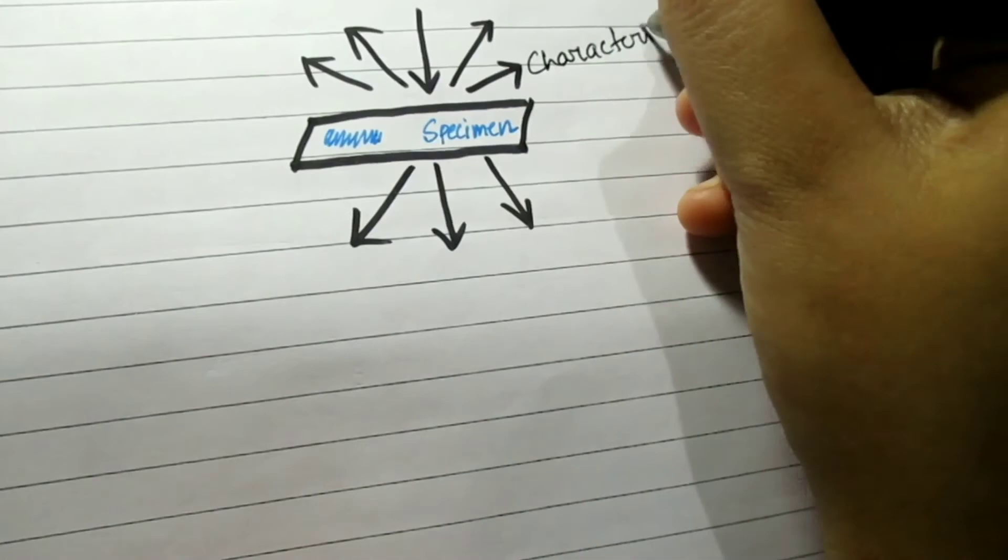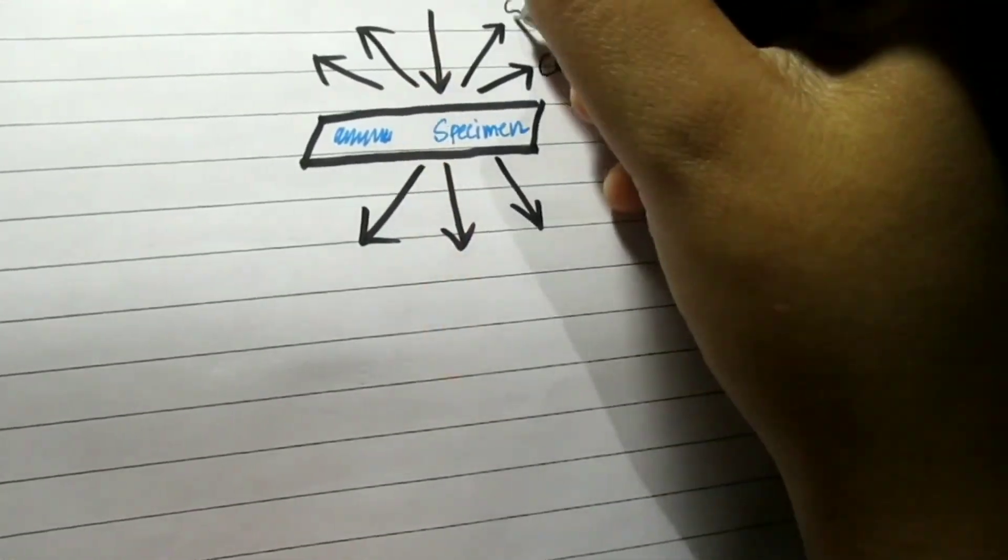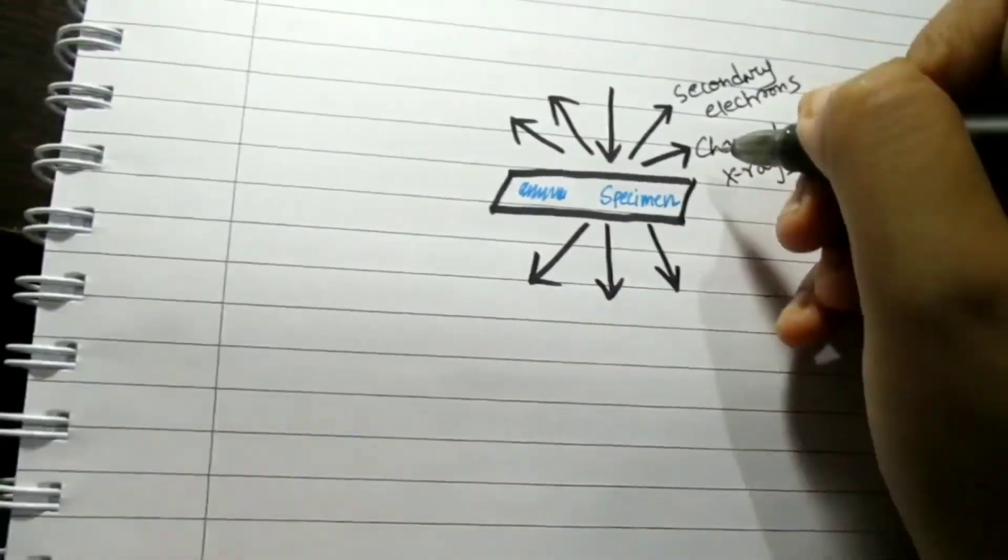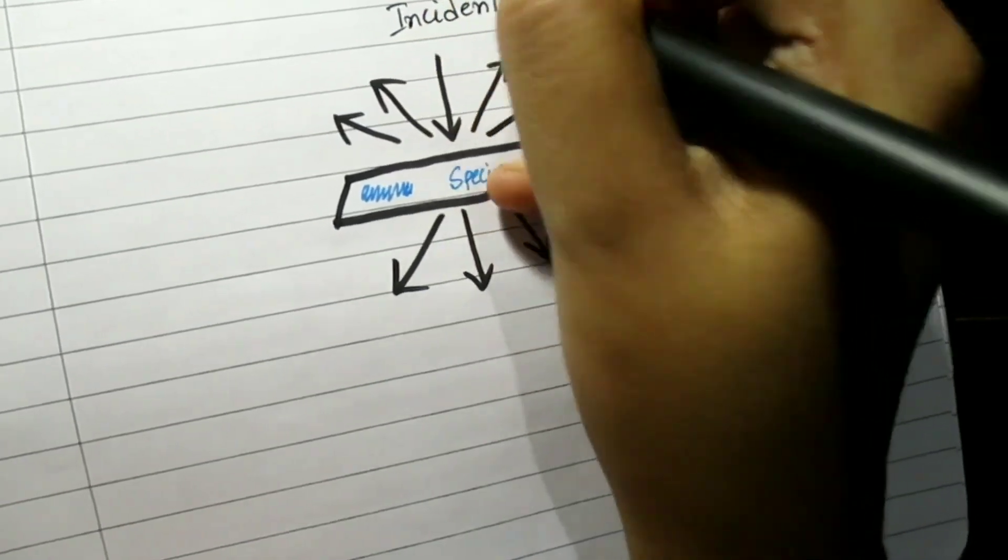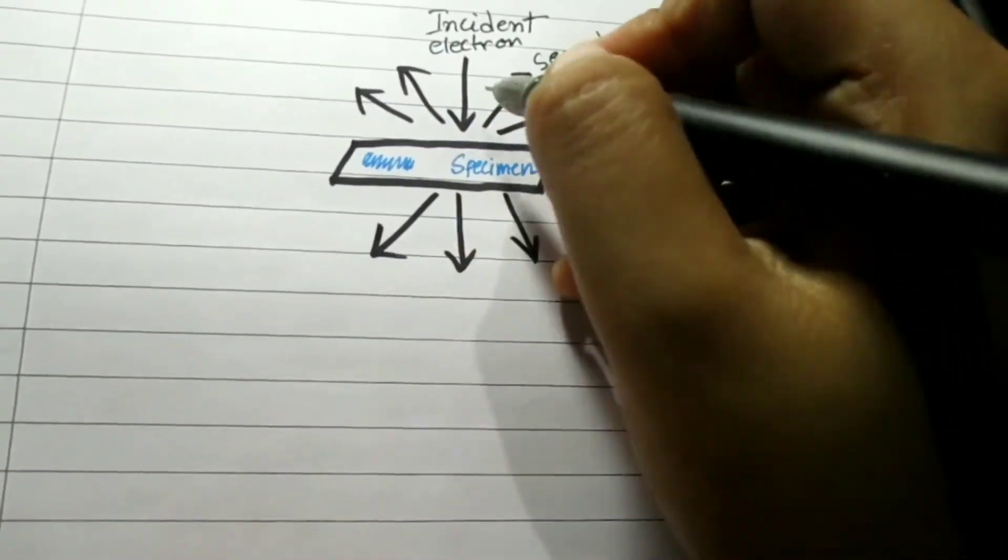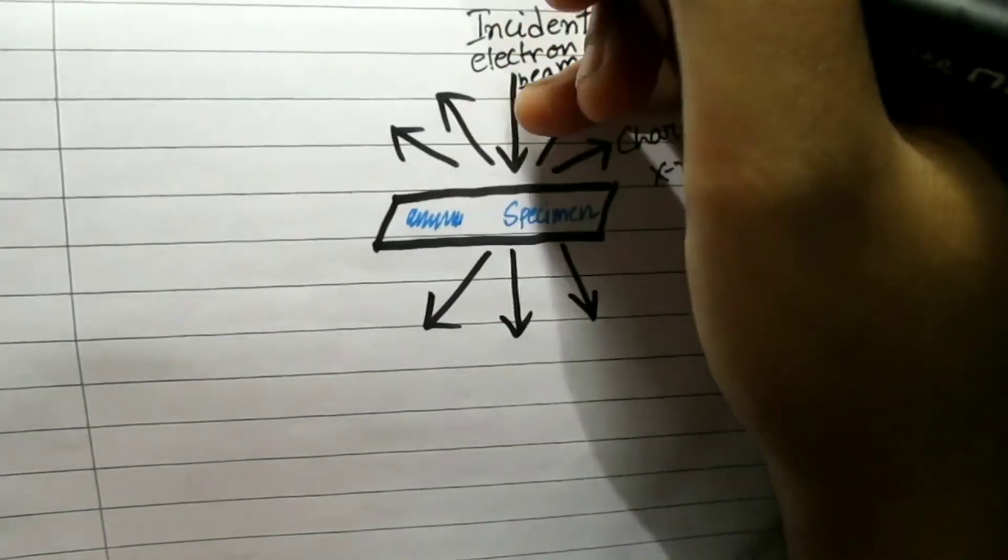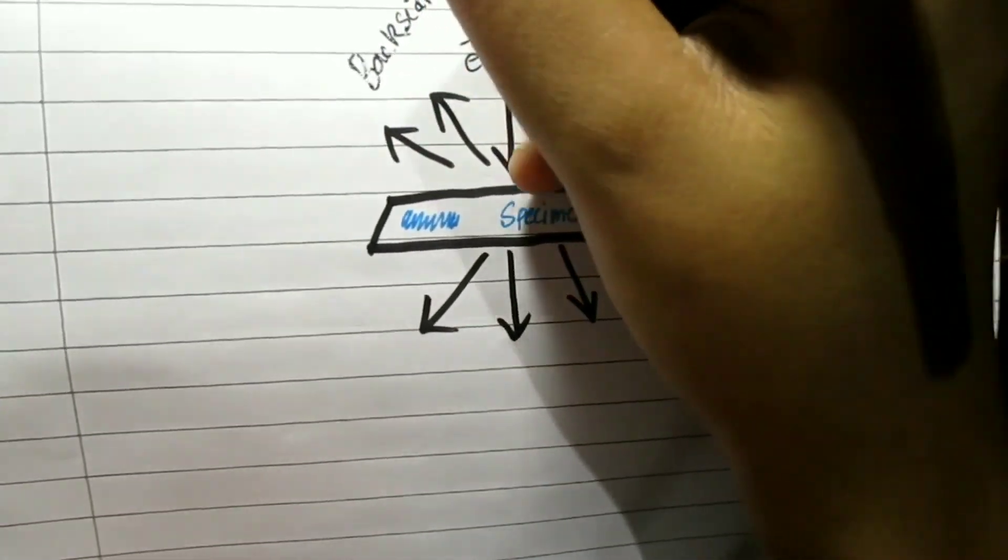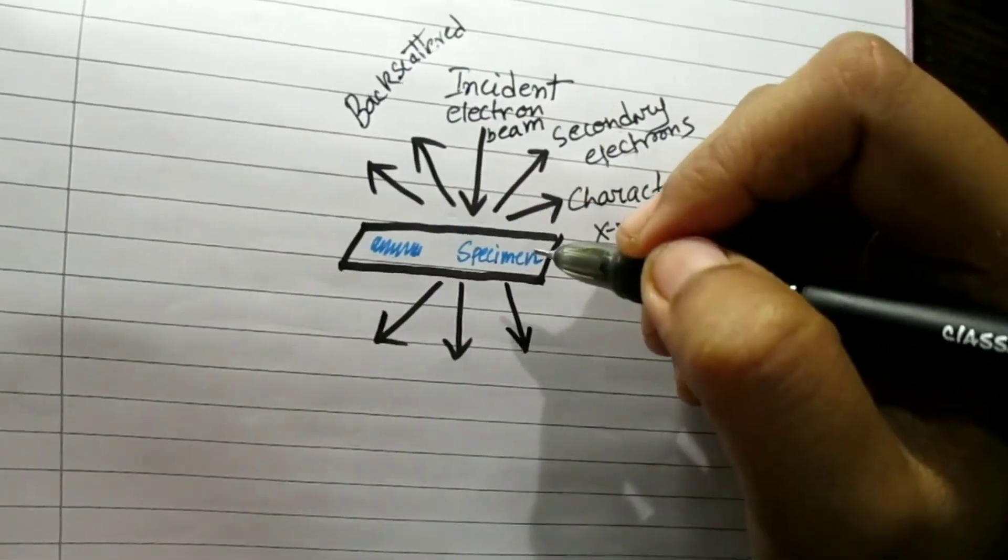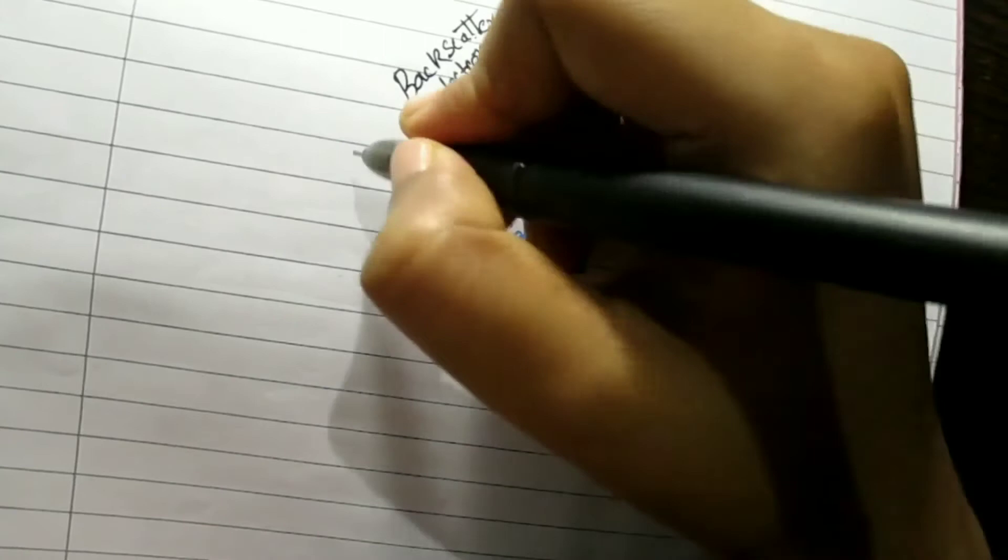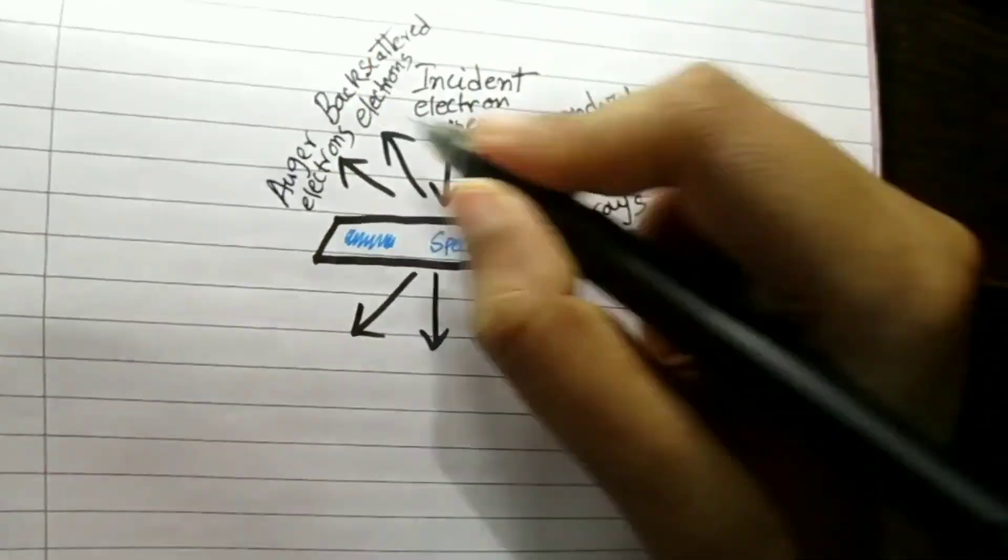Consider a beam of electrons focused on a screen. If no specimen were present in the column, the screen would be evenly illuminated by the beam of electrons producing an image that is uniformly bright. By contrast, if a specimen is placed in the path of the beam, some of the electrons strike the specimen and are scattered away.